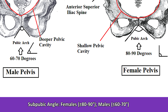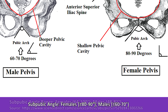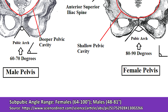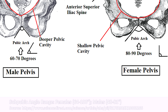These sub-pubic angles are not exact and they can vary from person to person. For example, one study that measured the sub-pubic angle on 109 pelves found that women had a possible sub-pubic range of 64 to 100 degrees and men had a possible range of 48 to 81 degrees. But generally speaking, the angle in women is going to be closer to about 80 or 90 degrees, and in men it's going to be closer to about 60 or 70 degrees.